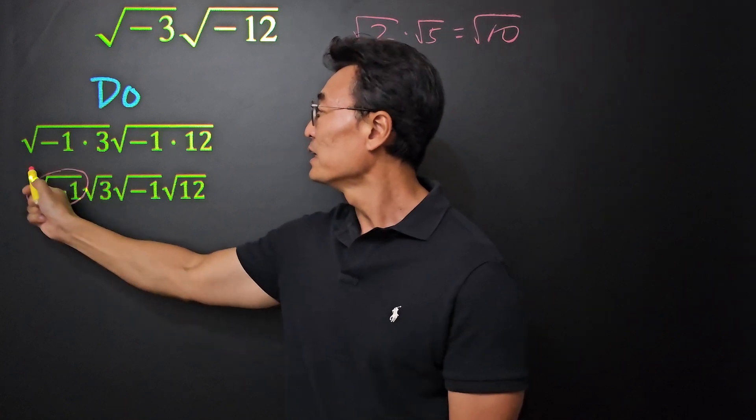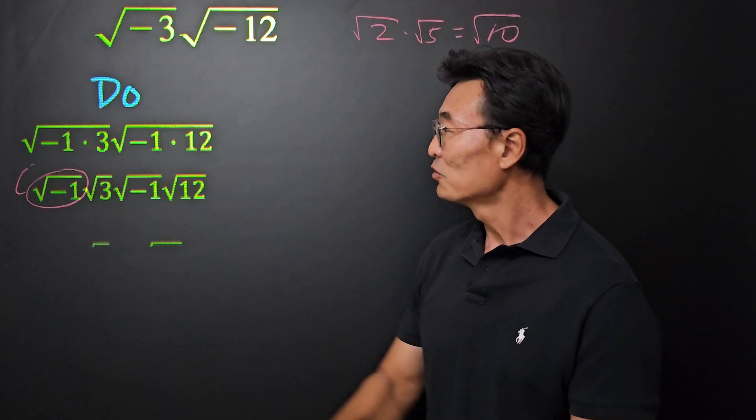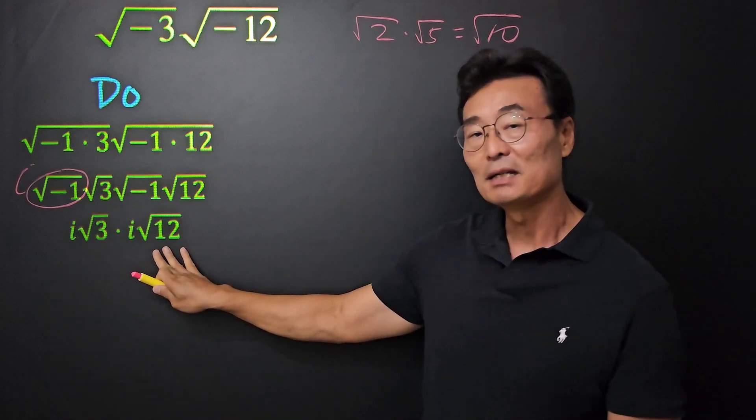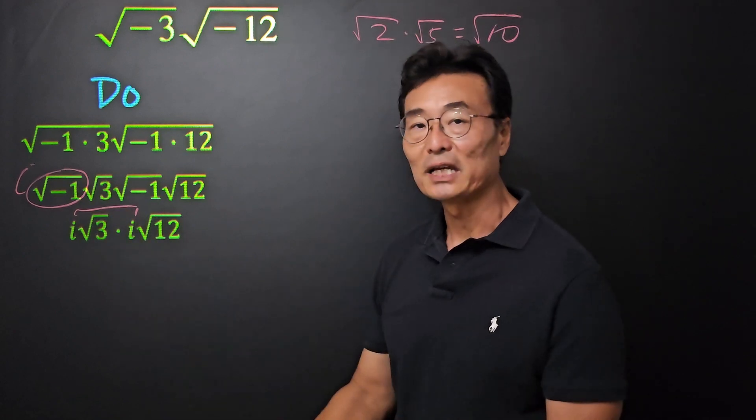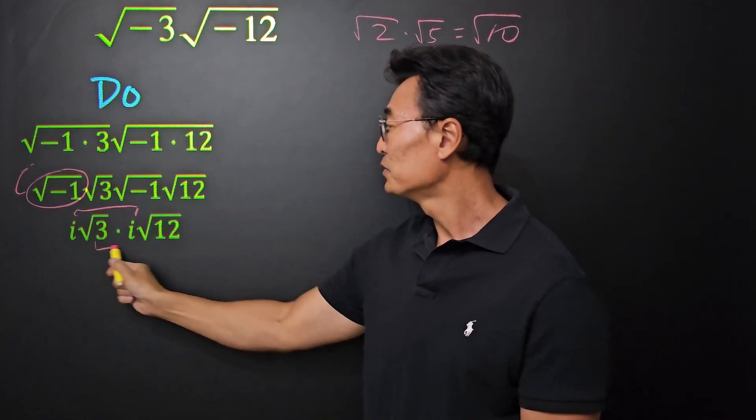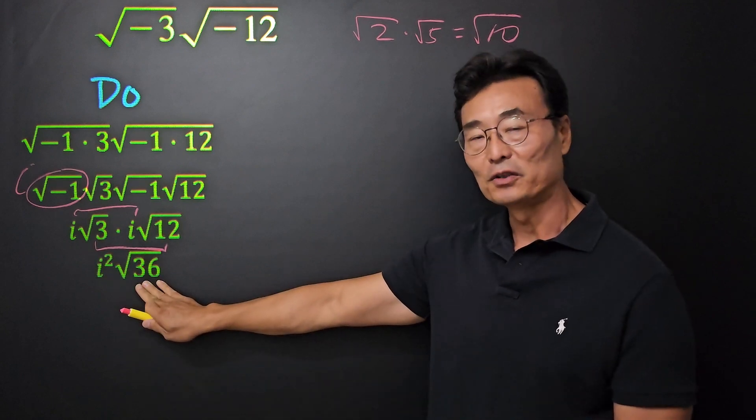Square root of negative 1 is i. By definition, that's what imaginary number is. So we end up getting i root 3 times i root 12. If we take the i times i, we get i squared, and also if we do root 3 times root 12, we get root 36.